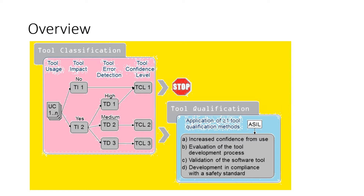TCL1 — Tool Confidence Level 1 — is where we stop the tool qualification activity, because it does not require further tool qualification. TCL2 and TCL3 do require tool qualification. For TCL2 and TCL3, the pre-ASIL determination is used as an input. Methods A, B, C, and D are used to perform tool qualification, which we will discuss in further slides.